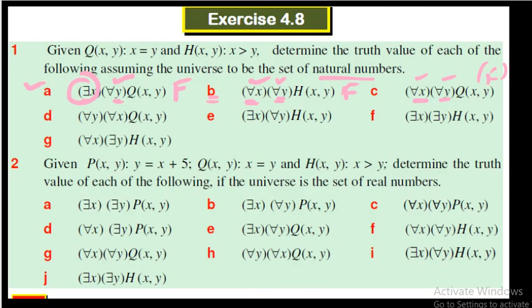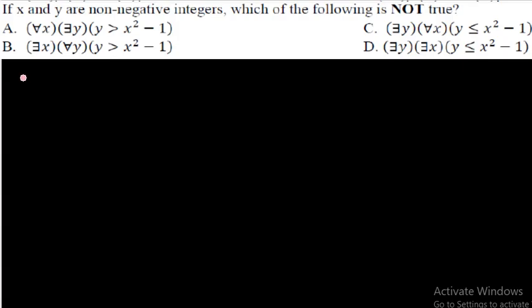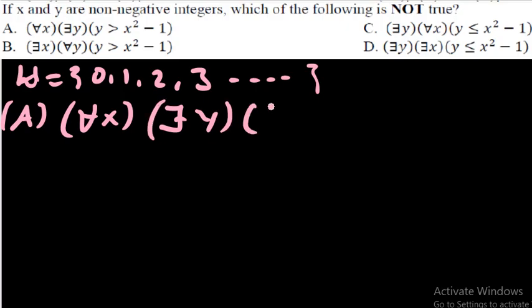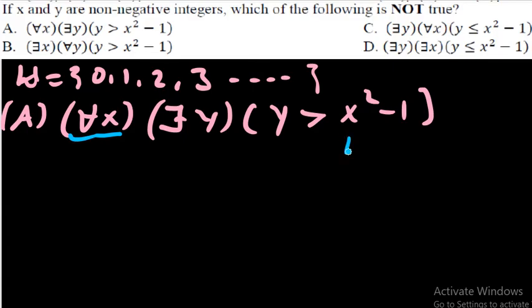Let's look at an exam-type question. The domain is the set of non-negative integers — integers that are not negative, so: 0, 1, 2, 3, and so on. The question asks: which of the following is NOT true? Choice (a) says: for every x, there exists y such that y > x² - 1.